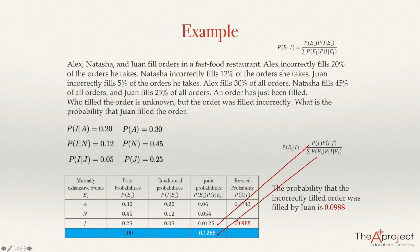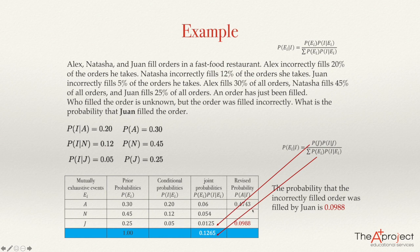We can find the probability that this incorrect order was filled by Natasha. If we do that, the answer must be a number that adding together all three revised probabilities gives 1. That will be a good homework for you — find the probability of Natasha given that the order was incorrect, and check your answer by verifying the three numbers sum to 1. And that completes my explanation about the Bayes' theorem. Thank you.